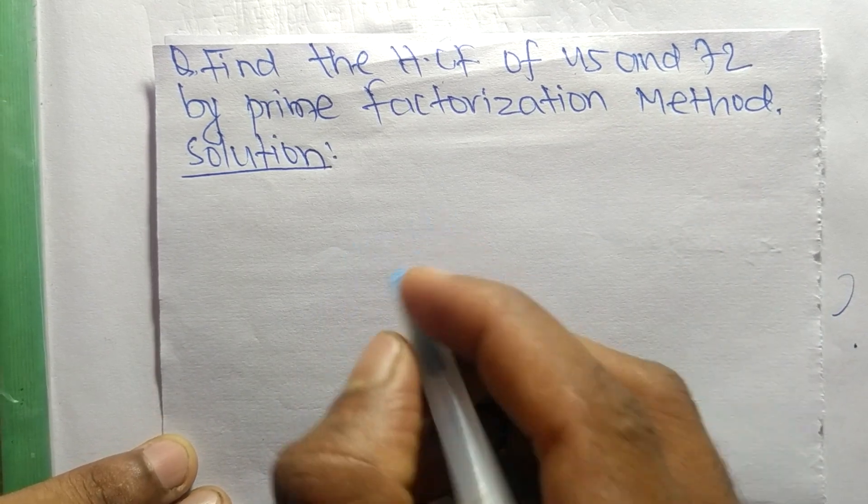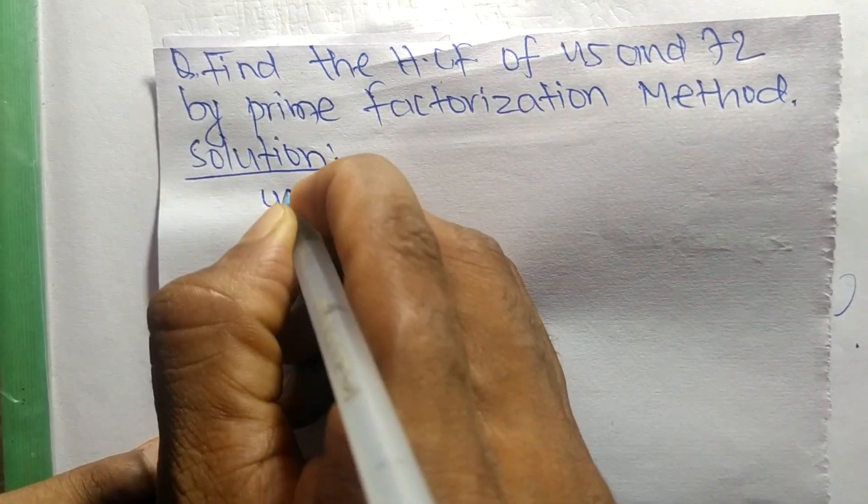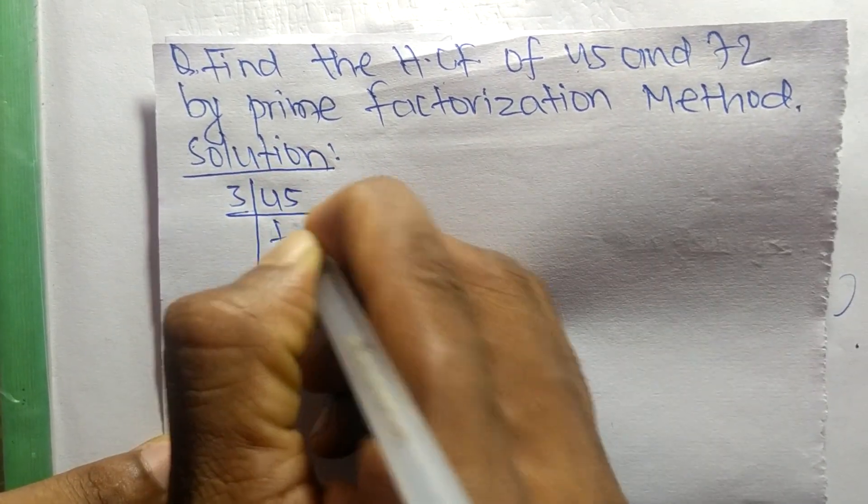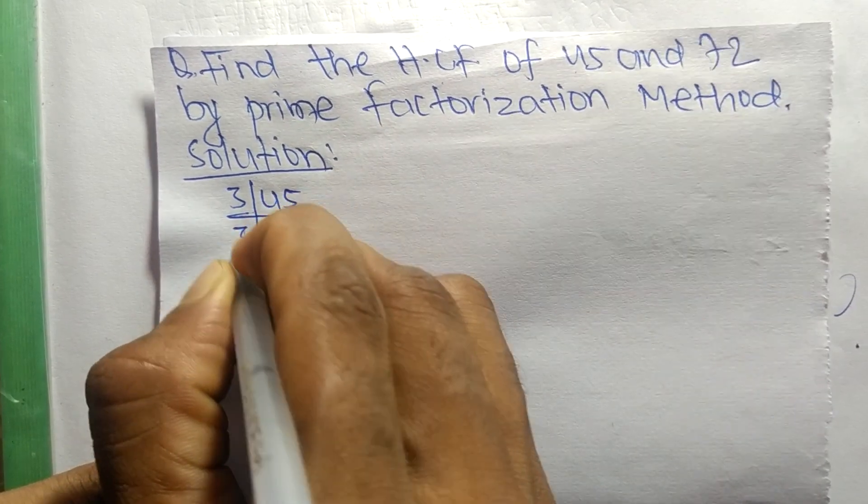First, we find out the prime factors of 45. It is 3 times 15 equals 45, then 3 times 5 equals 15.